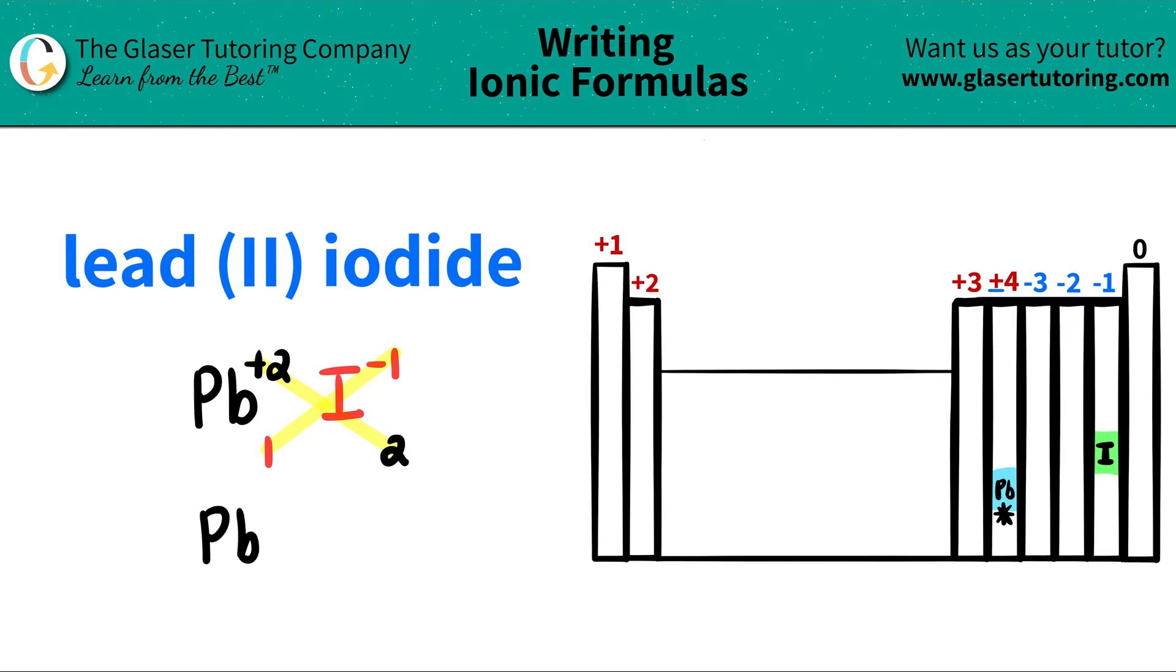Pb, I only need one, so I don't need this one here. But when I have the iodine, this is telling me that I need two iodines. So I'll just write a two here. And now I am done. So lead (II) iodide is PbI2.